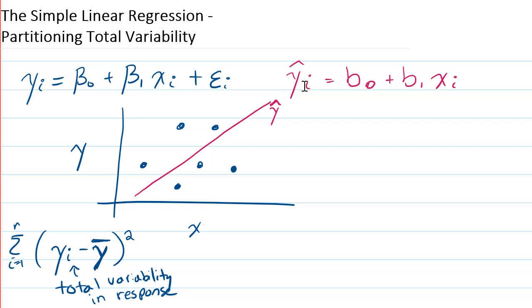Now recall that yi hat is trying to predict yi. So we also can calculate yi hat and the difference between yi hat and the mean of y. If we were to square this and sum it up for all the observations, this variability is called the variability that's explained by the model.